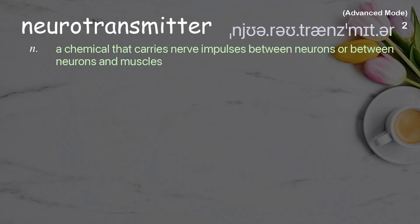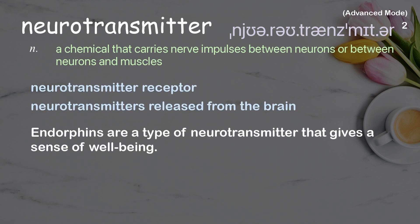Neurotransmitter: a chemical that carries nerve impulses between neurons or between neurons and muscles. Examples: neurotransmitter receptor, neurotransmitters released from the brain. Endorphins are a type of neurotransmitter that gives a sense of well-being.